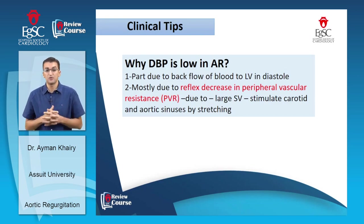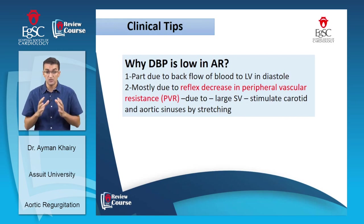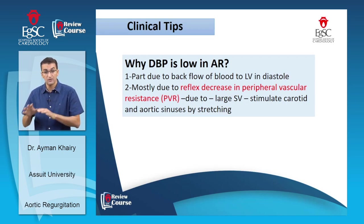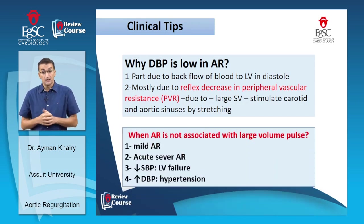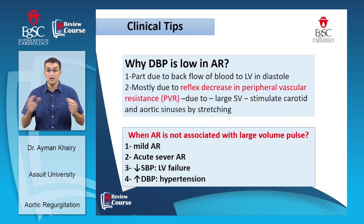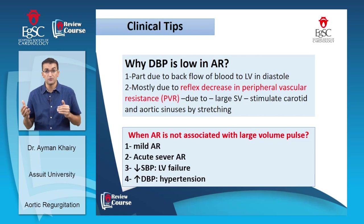The diastolic blood pressure is low partly due to backflow from aorta to left ventricle, but mostly due to reflex decrease in peripheral vascular resistance — the large stroke volume stretches carotid and aortic sinuses, causing reflex vasodilation. Large volume pulse may be absent in: mild aortic regurgitation, acute severe aortic regurgitation, any condition decreasing systolic BP such as LV failure or myocarditis, or conditions increasing diastolic BP such as hypertension.